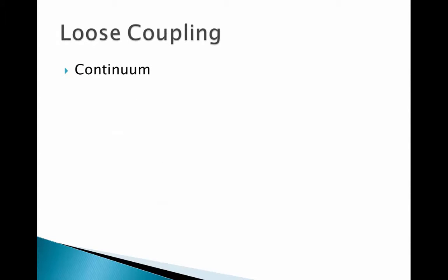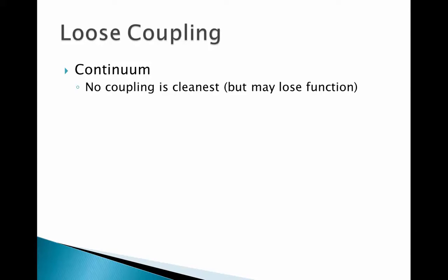What we really want to try to do is create loose coupling in our applications. Coupling is really a continuum — it's not an absolute this-is-loose and this-is-tight. There are different types of coupling, but I like to think of mainly three categories. First, if you have no coupling and don't depend on anything else, that's the cleanest you can get. Because if anything else changes, it doesn't affect you. The problem is you're going to lose functionality, because usually you need to depend on other things.